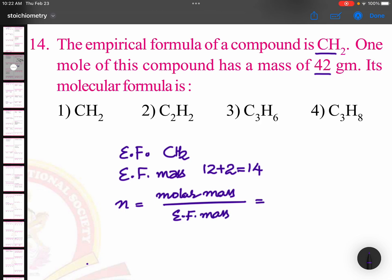And molar mass is given here: 42 grams. Empirical formula mass is 14. 14 times 3 is 42. Now if you want molecular formula, just multiply the empirical formula with that n factor. Empirical formula is CH2, n factor is 3, so it is C3H6.